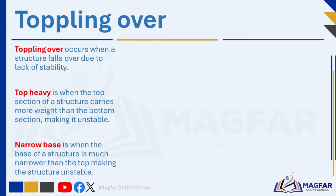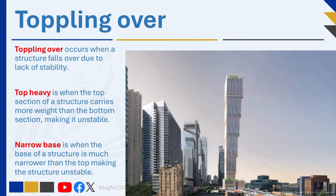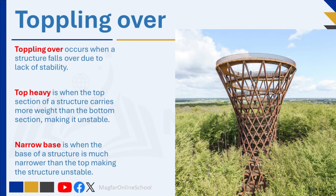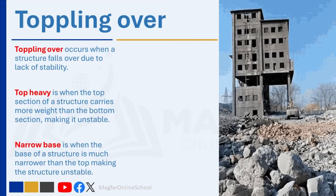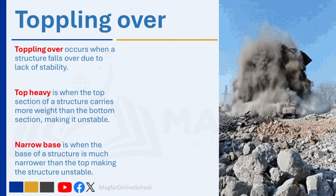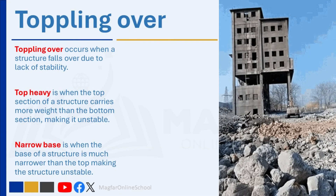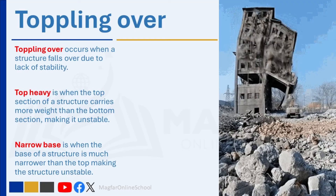Toppling over occurs when a structure falls over due to lack of stability. Stability is the ability of a structure to maintain its balance under load. The main cause of toppling is a structure that is top-heavy with a narrow base. Top-heavy is when the top section carries more weight than the bottom section, making it unstable. A narrow base is when the base of a structure is much narrower than the top. Factors that affect stability include the center of gravity, the base area, the weight distribution, and external forces. If the center of gravity of the structure falls outside its base, it will tip over. A high center of gravity or inadequate base support will result in toppling over.